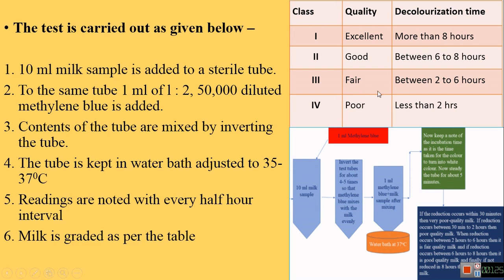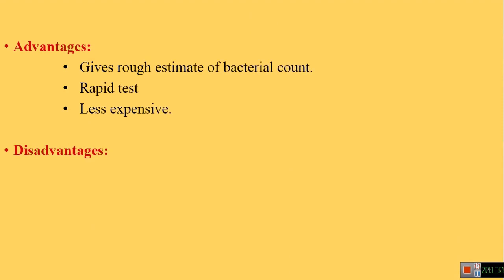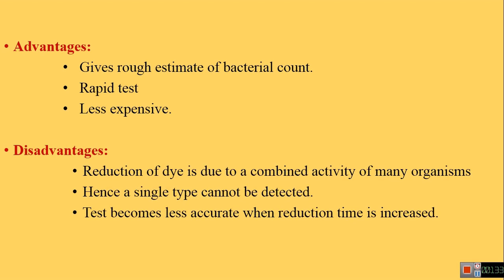If the decolorization time is more, the milk is of excellent quality; if it is less, the milk is of poor quality. The advantages of the MBRT test are: it gives a rough estimation of bacterial count rapidly, and it is inexpensive with minimal equipment requirements. The disadvantages are: the reduction of dye may be due to the combined activity of many microorganisms, so a single type of organism cannot be detected; and the test becomes less accurate when the reduction time is increased.